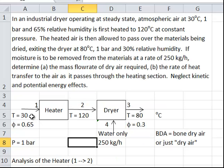I've drawn this so that I drew it as separate equipment. So it's a heater going from 30 degrees C, 0.65 relative humidity, to a temperature of 120 degrees C. I don't know the relative humidity here. I will be adding heat at this stage.